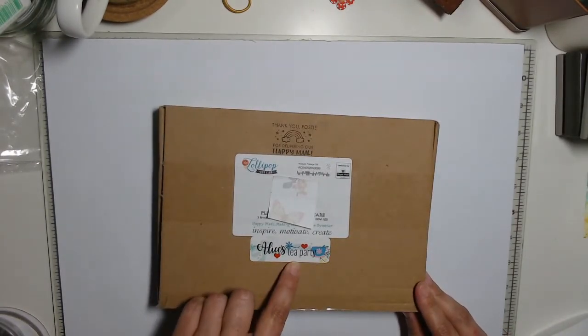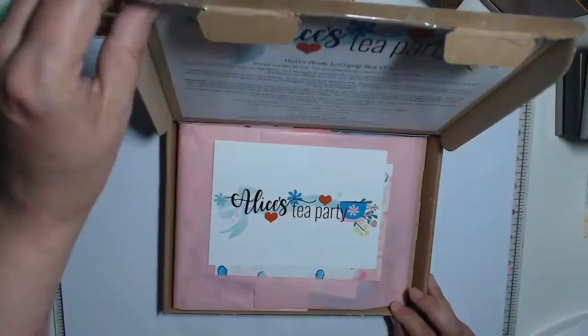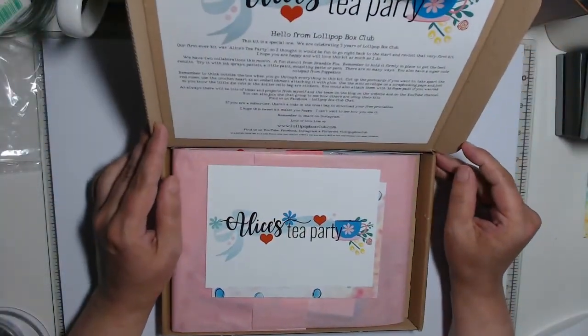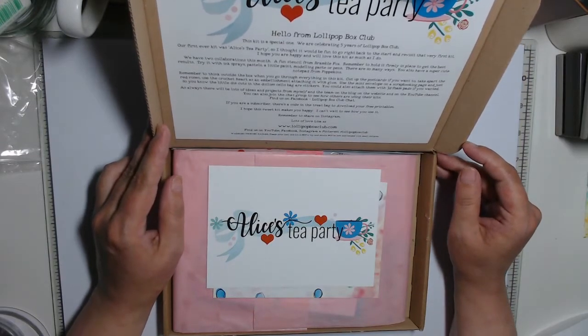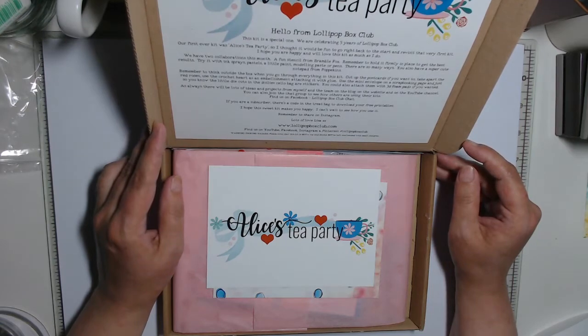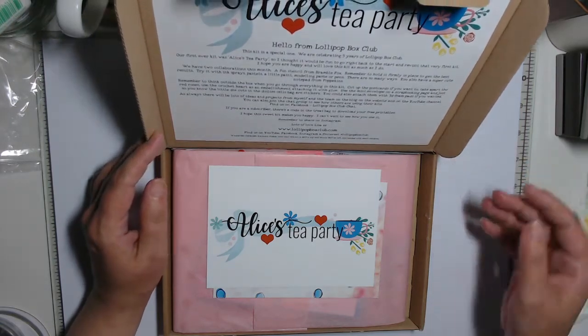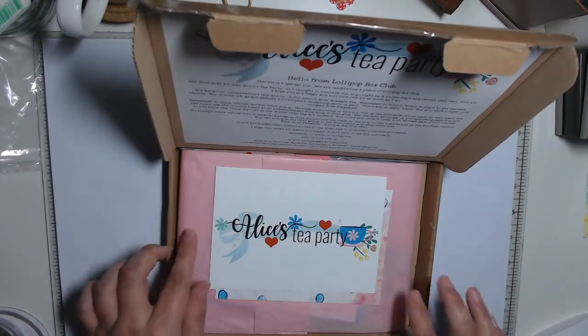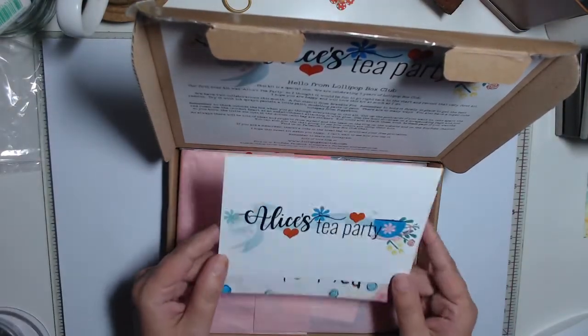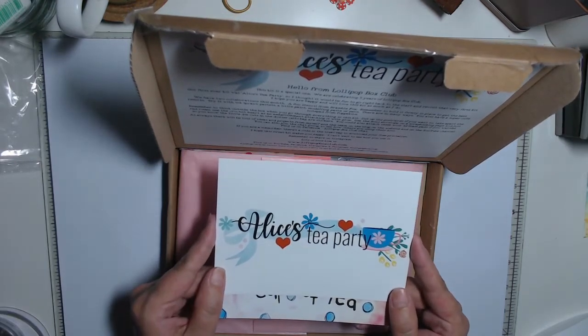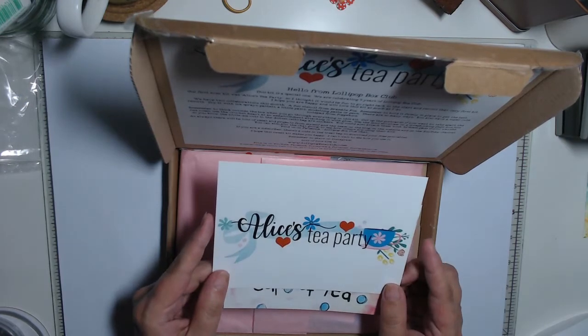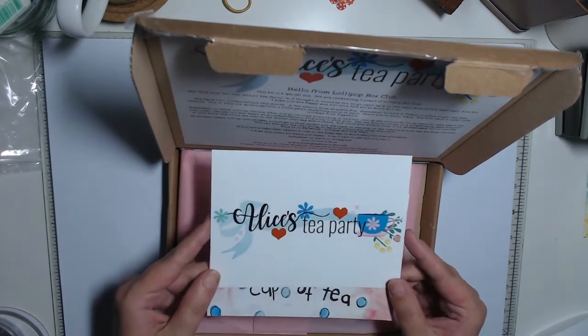This one is Alice's Tea Party and inside we've got information about the kit. There's lollipopboxclub.com and they're also on Facebook, Instagram, YouTube and Pinterest. This is like a crafty, scrappy, scrapbooky hobby. And this is their fifth birthday kit, so this one's got some extra goodies in it.